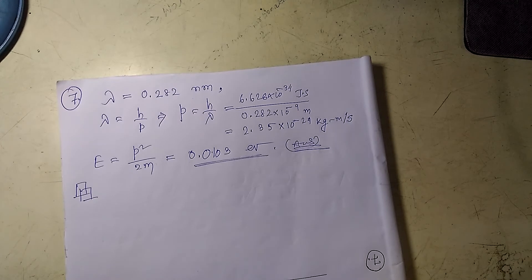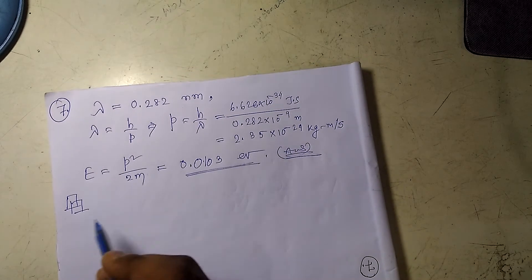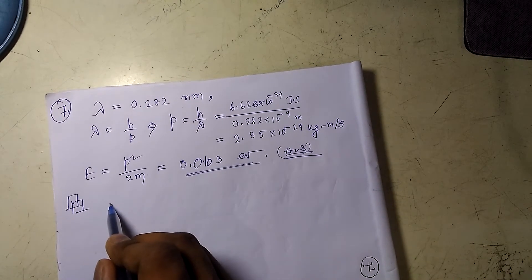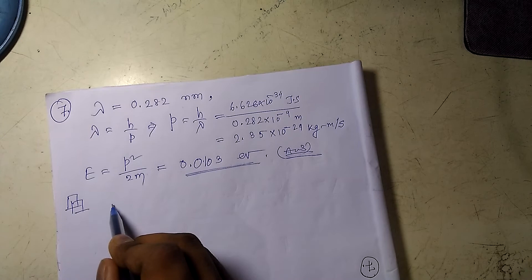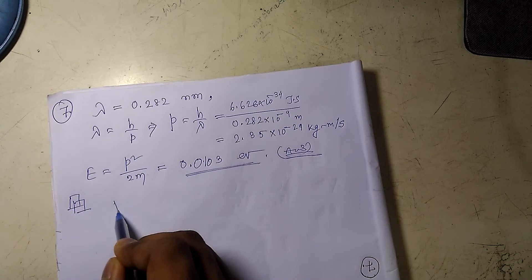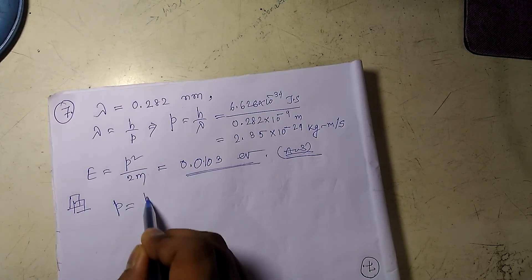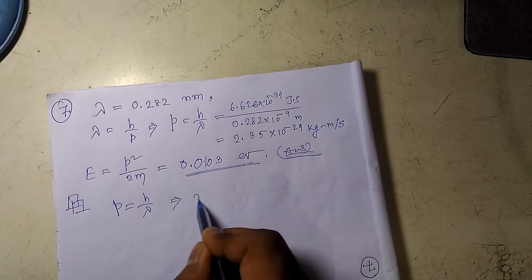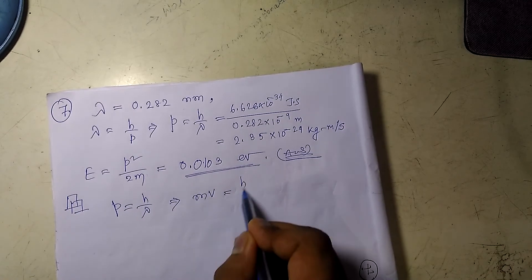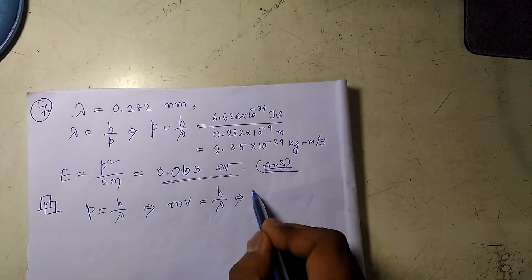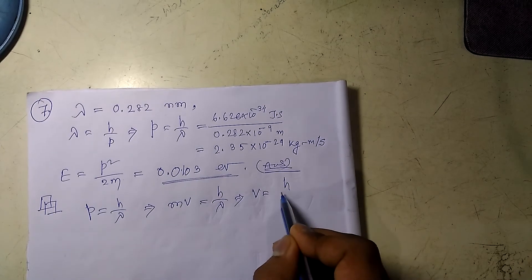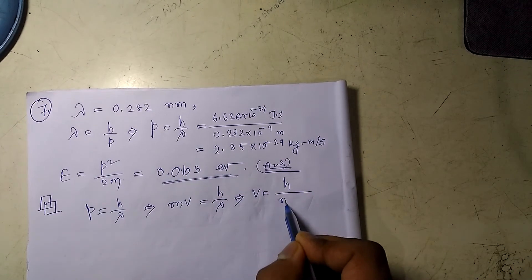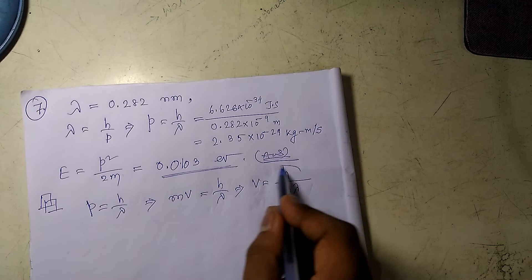For checking if we need a relativistic calculation or not, we have to compare the speed of light with the speed of the particle in this problem. So what we need is a velocity. So we know P equals H by lambda. P is nothing but mass times velocity equals H by lambda. So V equals H by M lambda.